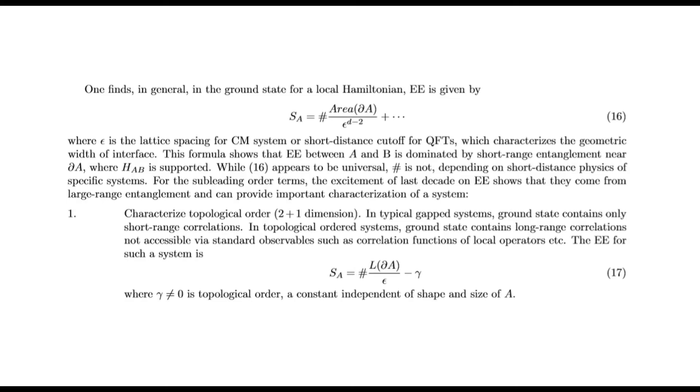Locality of interactions: One finds in general in the ground state for a local Hamiltonian, entanglement entropy is given by S_A = α(∂A/ε^(d-1)) + ... where ε is the lattice spacing or short-distance cutoff, which characterizes the geometric width of the interface. This formula shows that entanglement entropy between A and B is dominated by short-range entanglement near ∂A, where H_AB is supported. While the area term appears to be universal, the coefficient is not. The excitement of the last decade on entanglement entropy shows that sub-leading order terms come from long-range entanglement and can provide important characterization of the system.